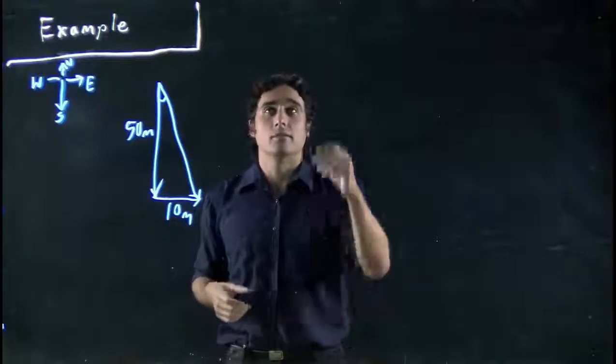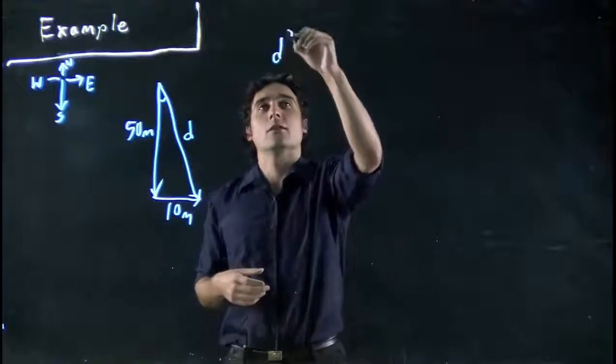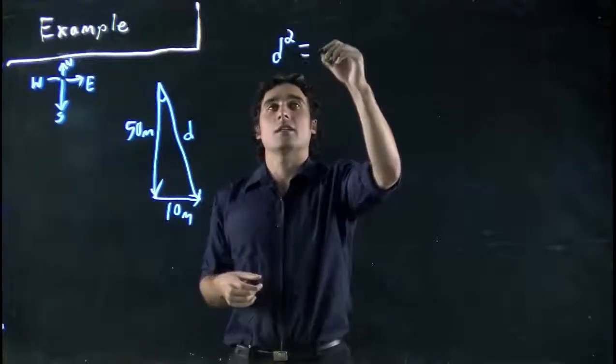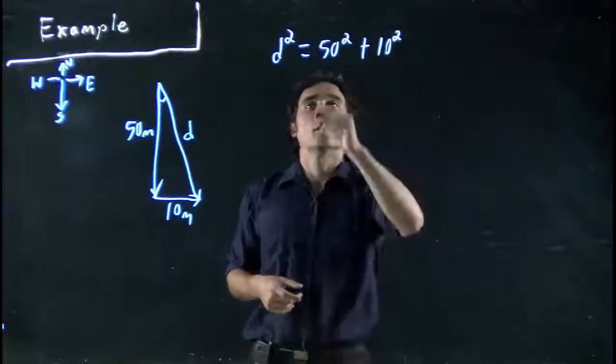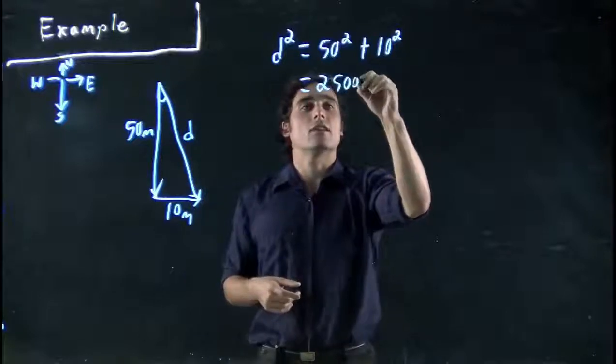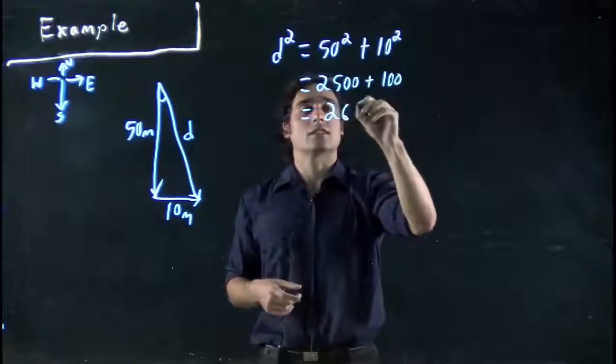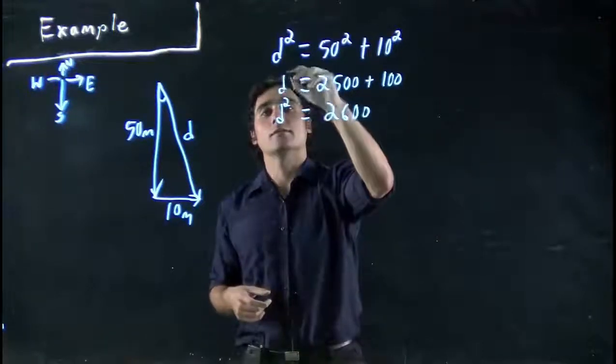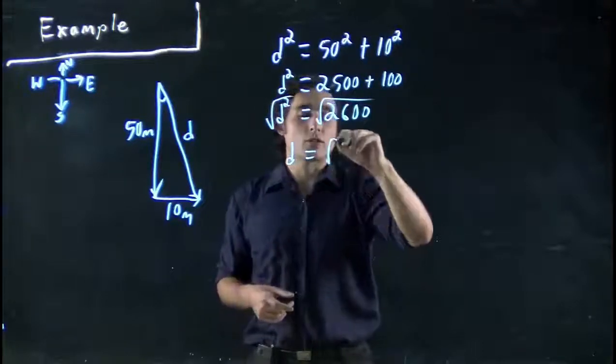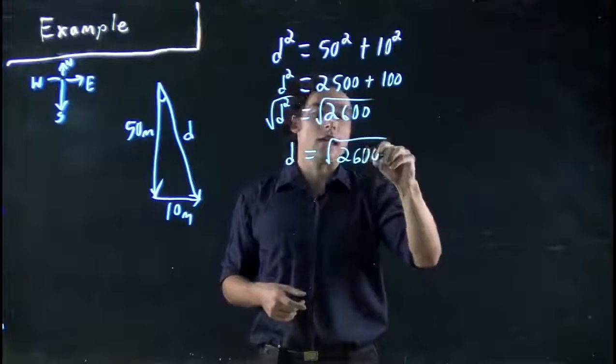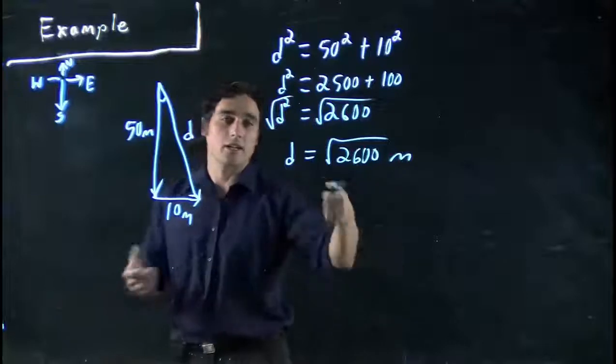Well, in this case we'd be using Pythagorean theorem. This distance we can call d. We know Pythagorean theorem: d squared equals 50 squared plus 10 squared, or 2500 plus 100 equals 2600. All that equal to d squared. So d, if we take square root of both sides, would just be whatever the square root of 2600 happens to be in terms of meters. That would give me my distance.